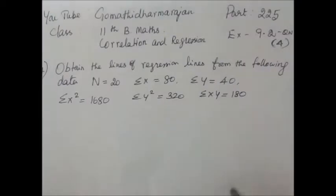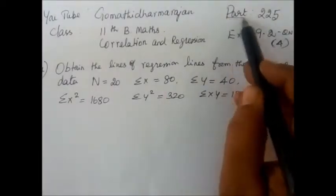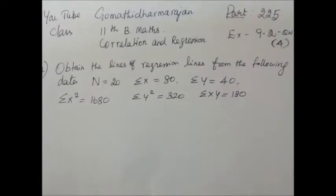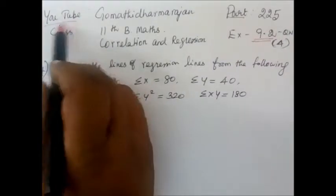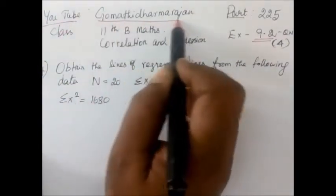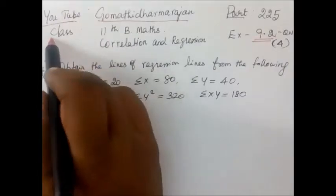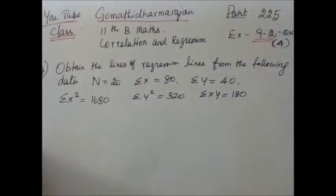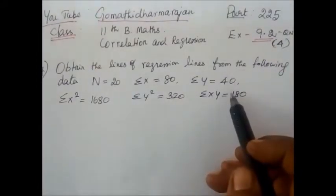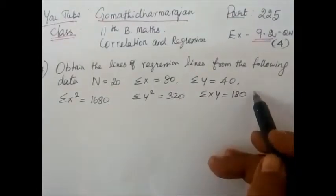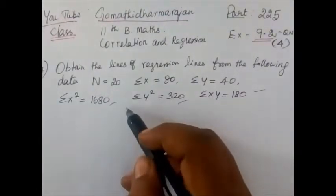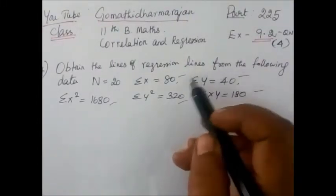So, next question. Part number 225. We are seeing Exercise 9.2, Question number 4. Last class was Question number 3; now Question number 4. In the video on YouTube, you can see in the name Gomuthi Dharmaradhan, Class 11, Business Maths — Correlation and Regression. We will obtain the lines of Regression — you will be finding the lines of Regression.